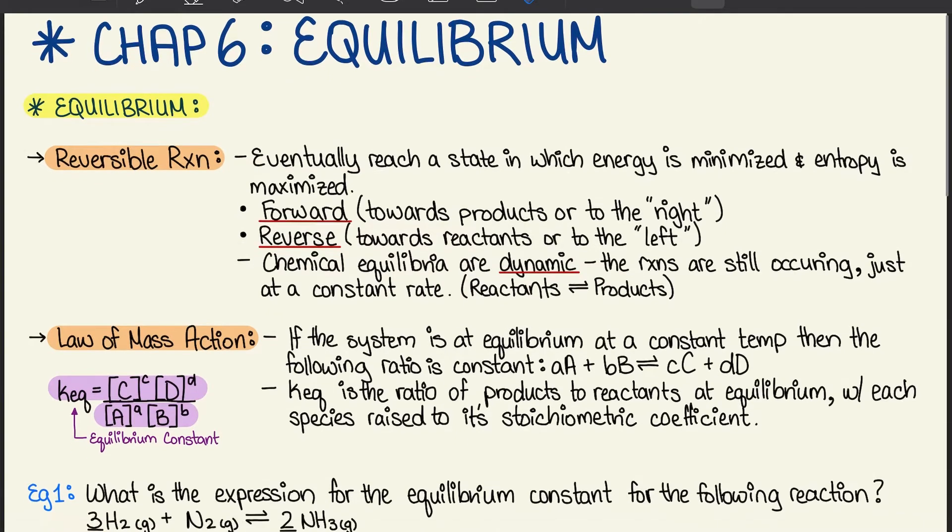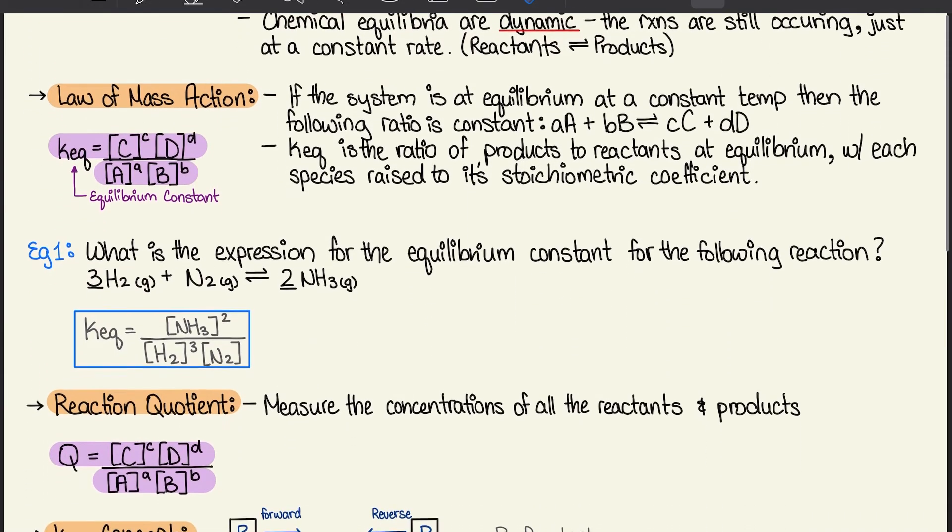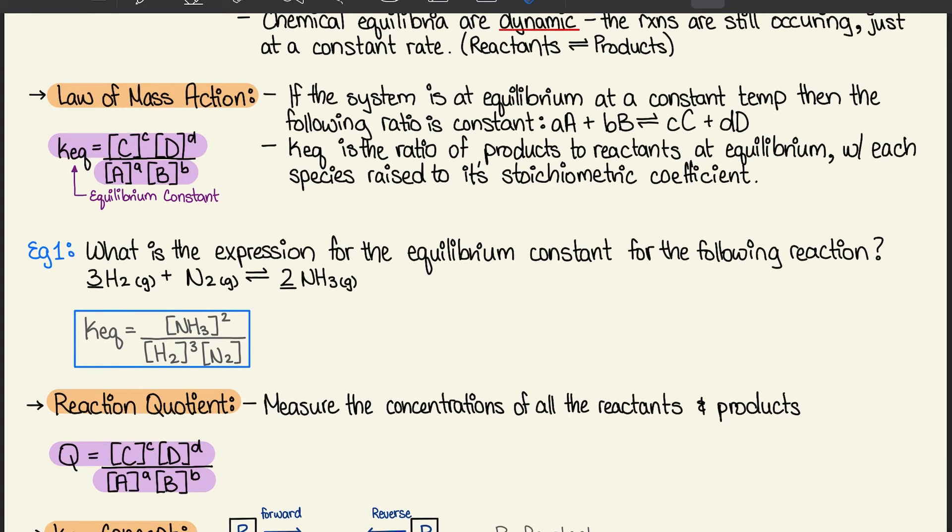So moving on to the law of mass action. If the system is at equilibrium at a constant temperature, then the following ratio is constant. And that's the equation there. So KEQ is the ratio of products to reactants at equilibrium, with each species raised to its stoichiometric coefficient.